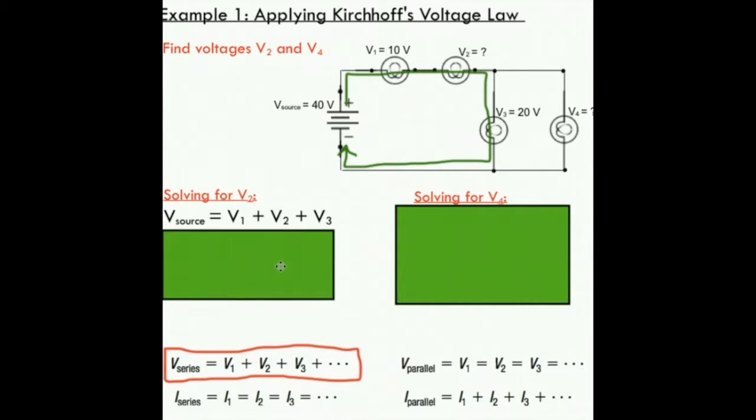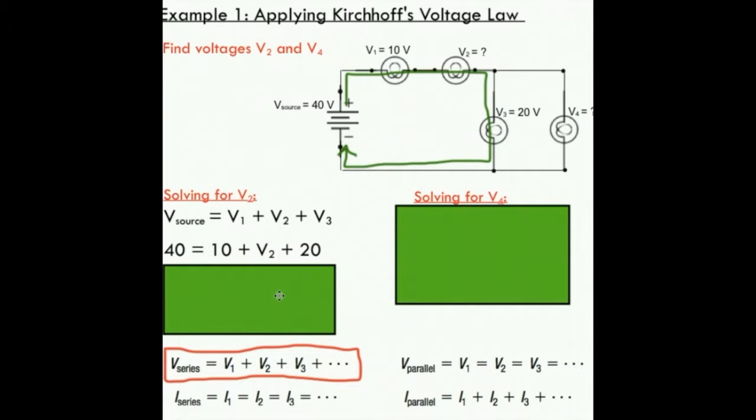I know that my source has a voltage of 40 volts, so I'm just going to substitute in these individual voltages. We're not looking at V4 yet, we're going to get to that in a minute. Substituting those values gives me the following. As you can see here, I'm able to solve for V2.